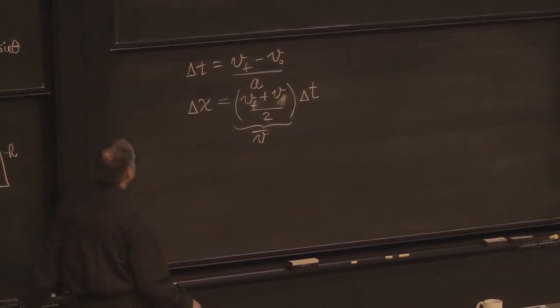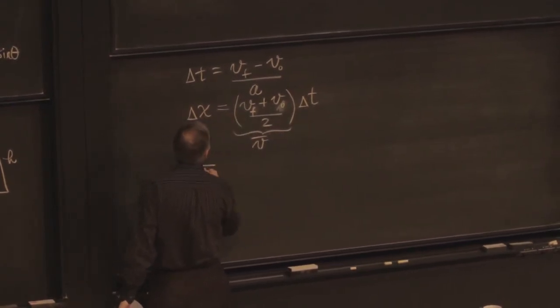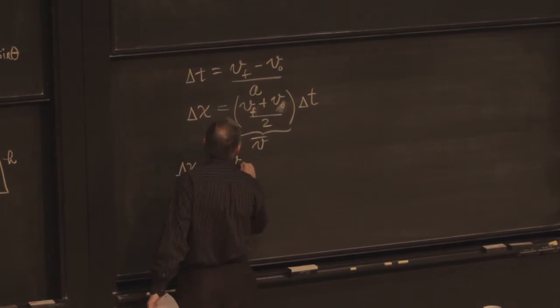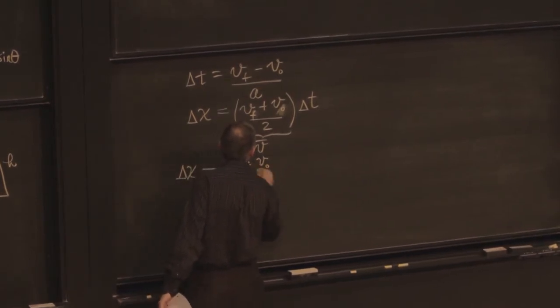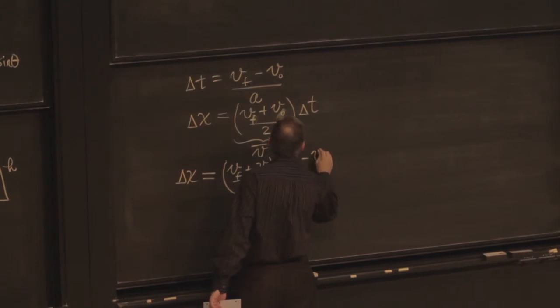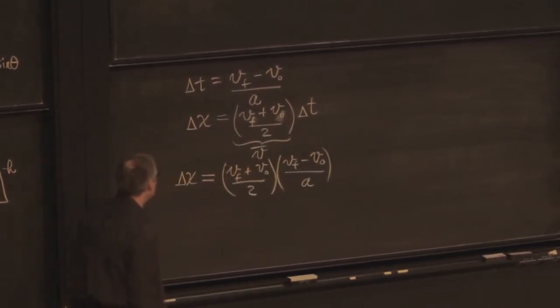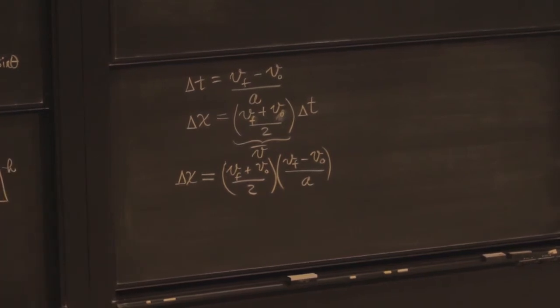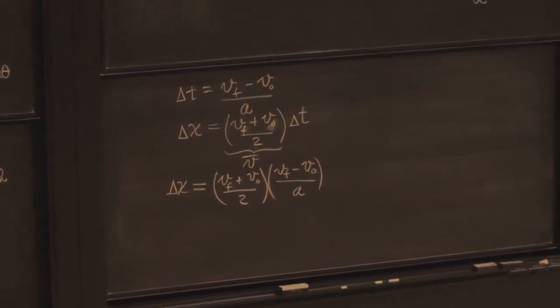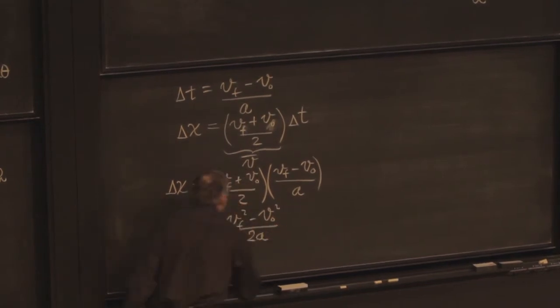So let's see here. I know what delta t is. So I have delta x is equal to v final plus v initial over 2 times v final minus v initial over a. Now, that's interesting. That looks like v final squared minus v initial squared over 2a.